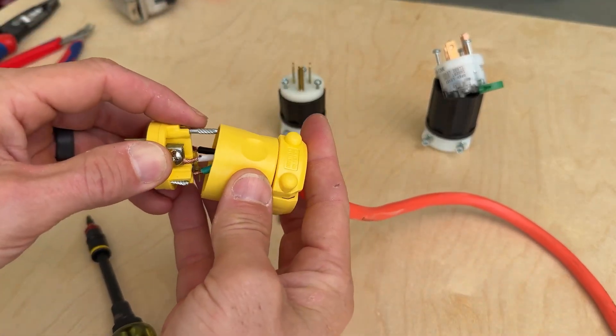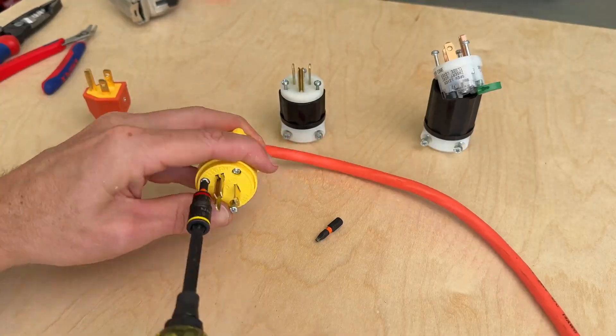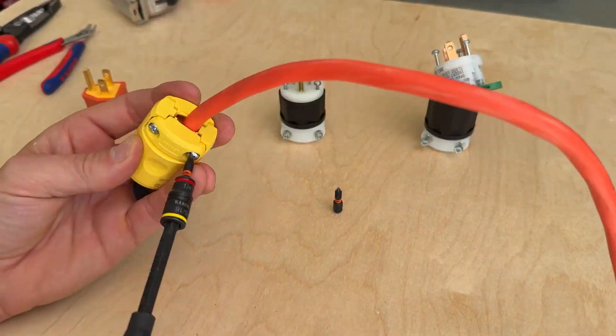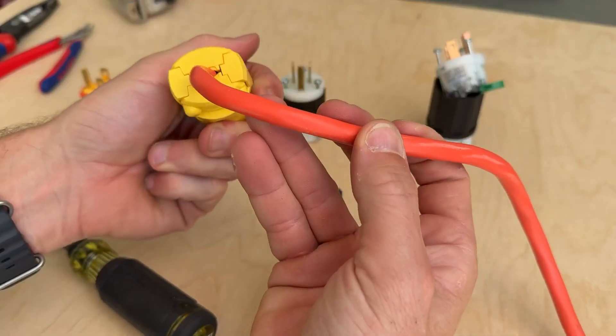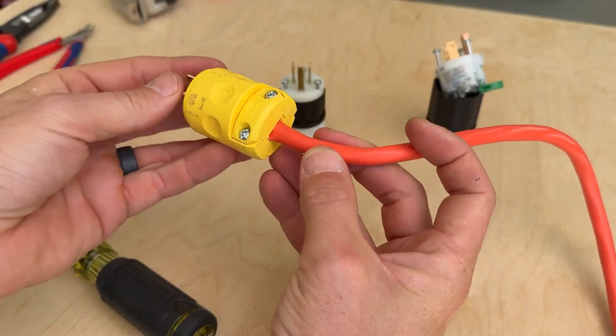So we'll go ahead and tighten those three screws to secure the plug to the housing, and then use our number one square drive to cinch down the strain relief. Overall, it's looking pretty good.